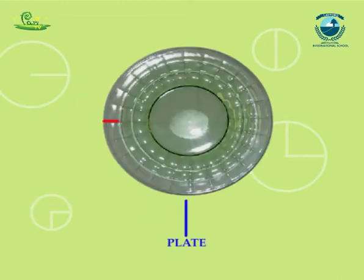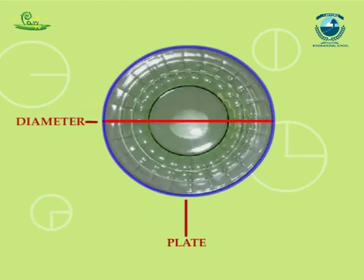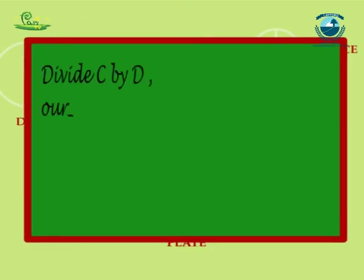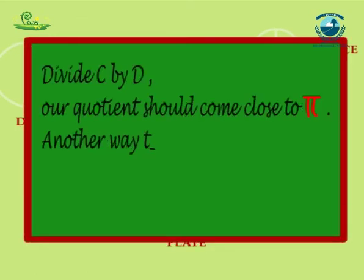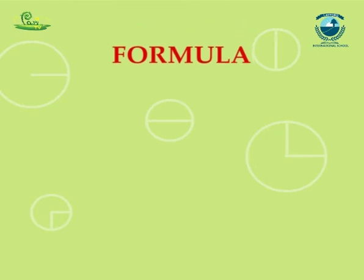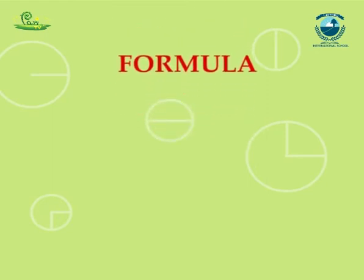We can test this formula at home with a round dinner plate. If we measure the circumference and the diameter of the plate and then divide c by d, our quotient should come close to pi. Another way to write this formula is c equals pi times d.